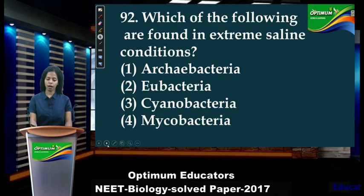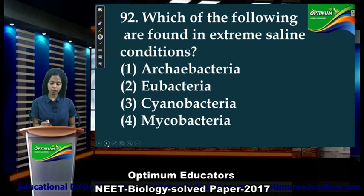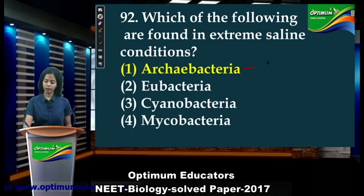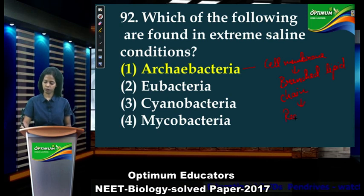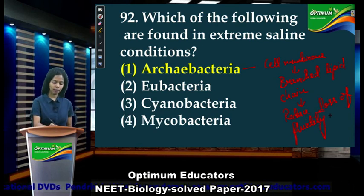Next question: 'Which of the following are found in extreme saline conditions?' Out of these 4 bacteria, which can survive in extreme saline conditions? The answer is archaebacteria. The reason is that archaebacteria have branched lipid chains in their cell membrane, which reduce loss of fluidity. The rest of the bacteria don't have this feature, so archaebacteria is the correct answer.